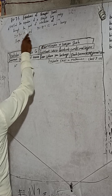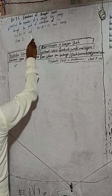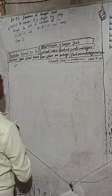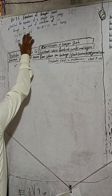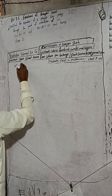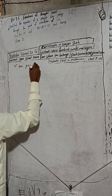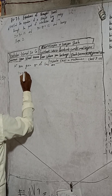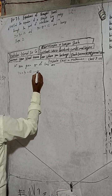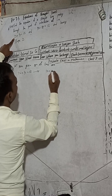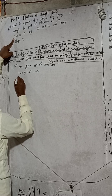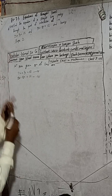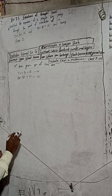Find the equation of a straight line passing through the point of intersection of lines 2x + 3y = 17 and 9x - 8y = 12, and having slope 2. First we have to find the point of intersection of these lines. The given equations are: equation 1 is 2x + 3y = 17, and equation 2 is 9x - 8y = 12.